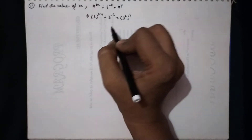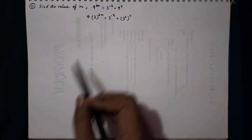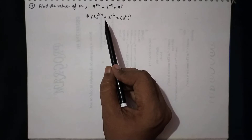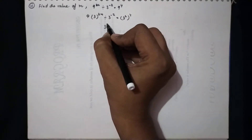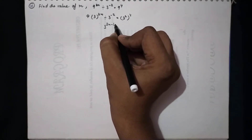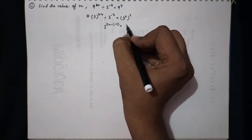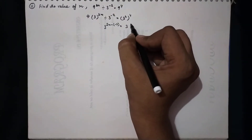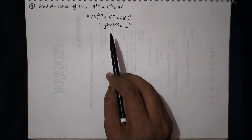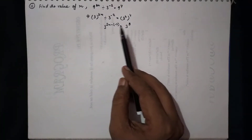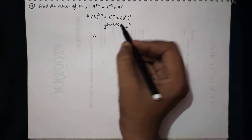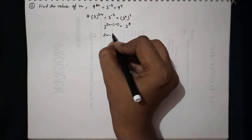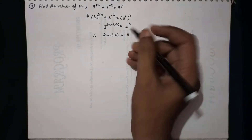Since we have a division sign, we will subtract the powers. This becomes 3^(2m − (−2)) equals 3^8. We see that both LHS and RHS have the same base, so we can equate the powers: 2m − (−2) equals 8.